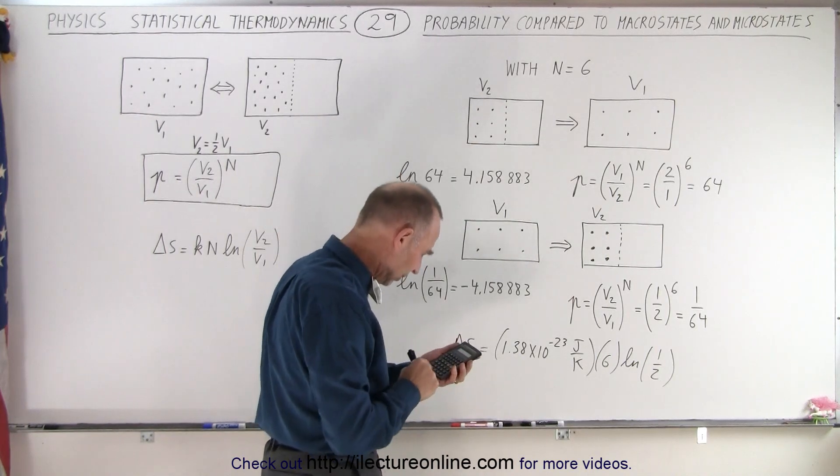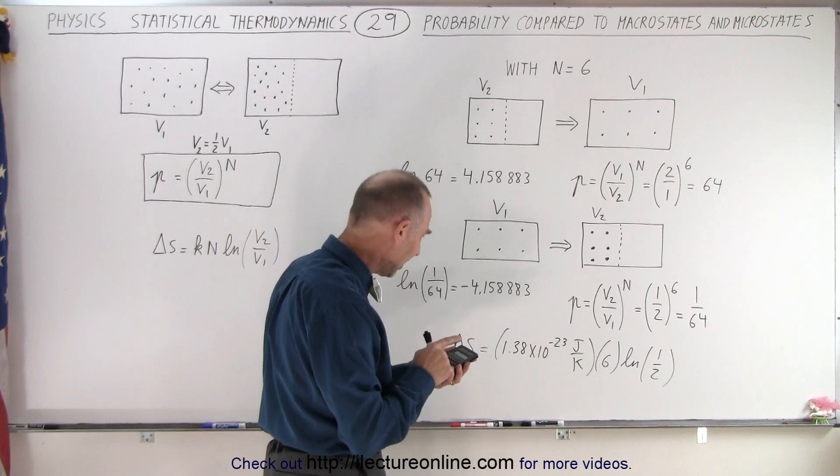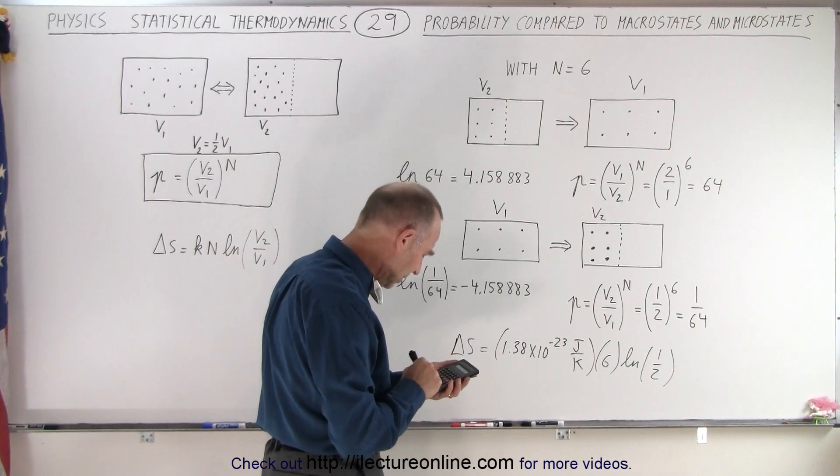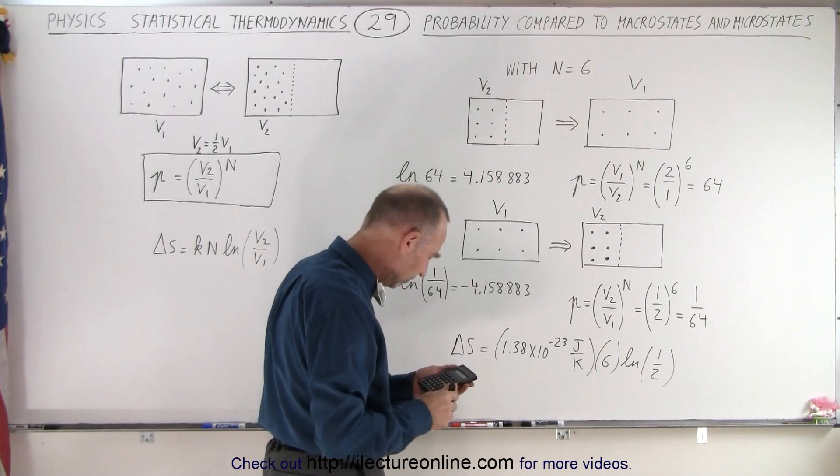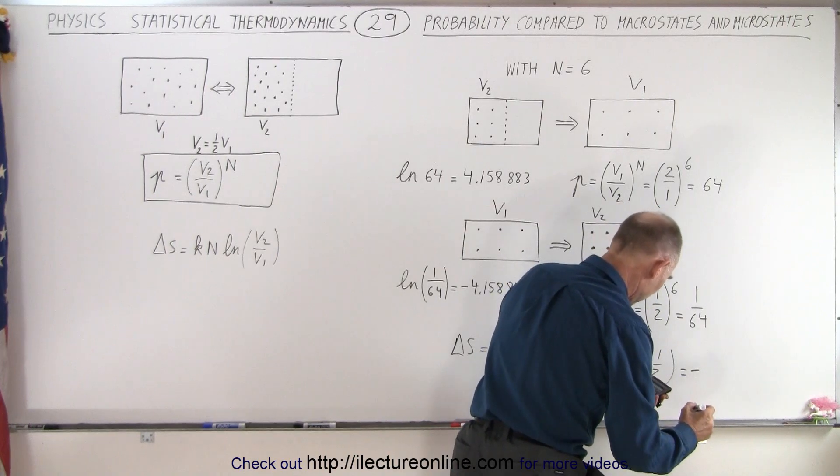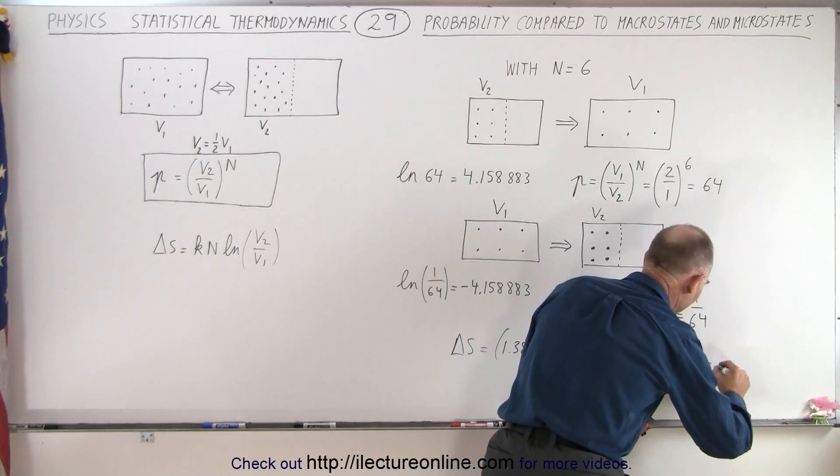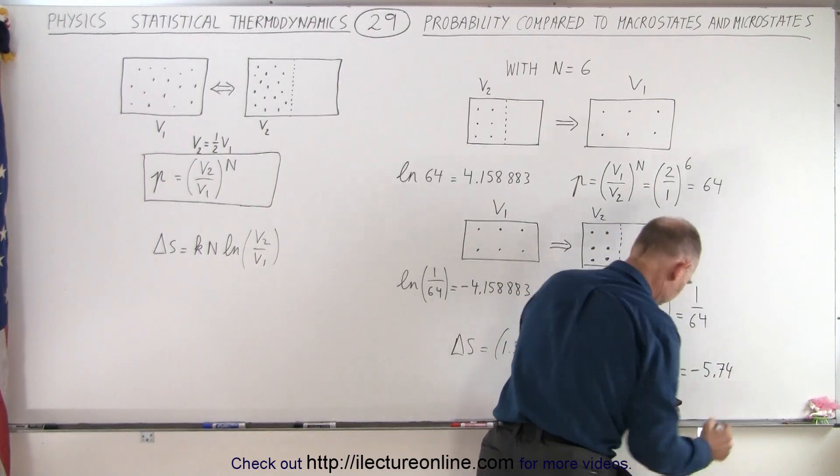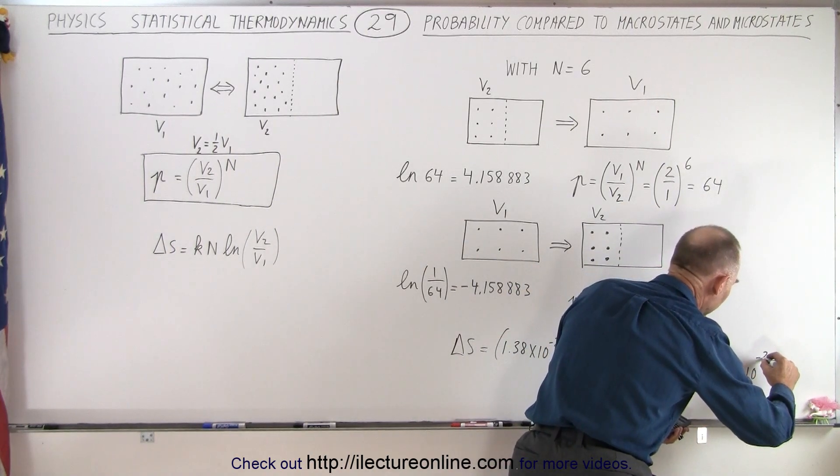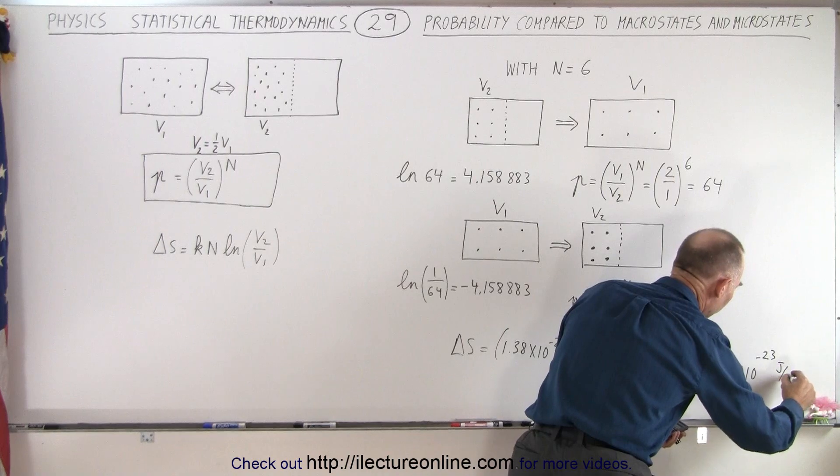So, we take 0.5, take the natural log of that, times 6, times 1.38 e to the 23 minus equals, whoa, what happened? Got to do it again. 0.5, take the natural log of that, times 6, and times 1.38 e to the 23 minus equals, there it is, that gives us an entropy change of minus 5.7, essentially 5.74, times 10 to the minus 23 joules per Kelvin.